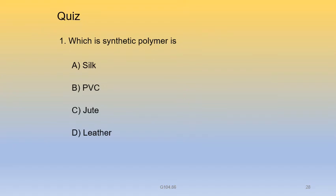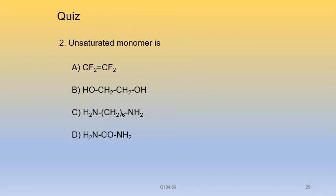Multiple choice questions. Which is a synthetic polymer? Options: silk, PVC, jute, leather. The answer is silk (option A) — silk is the synthetic polymer.